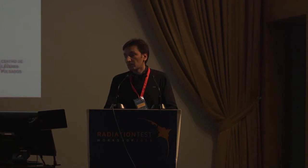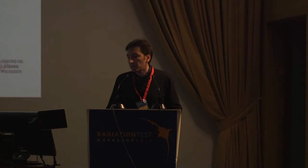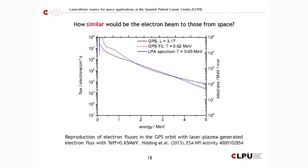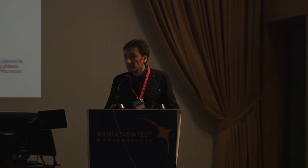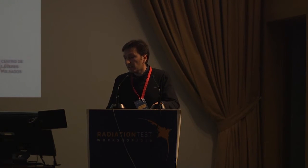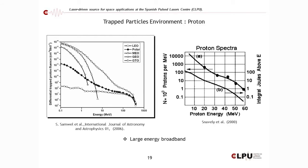So how similar can the laser-produced beam be? These are real experiments by Hidding et al., done a few years ago. They truly matched the expected electron spectrum for a GPS orbit with a measurement from a laser-plasma accelerator. The temperature in that case was 0.6 MeV. What about protons? You can similarly obtain simulated proton spectra for different orbits using the same tools.